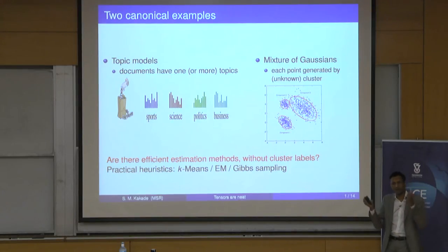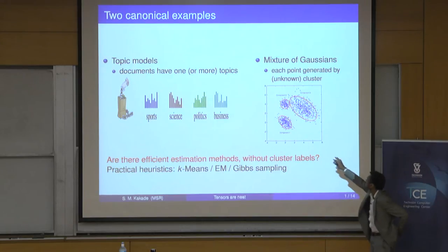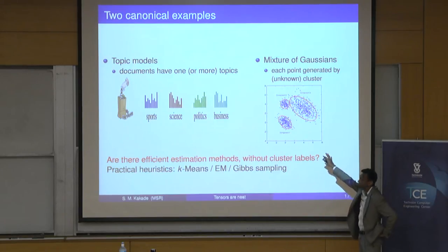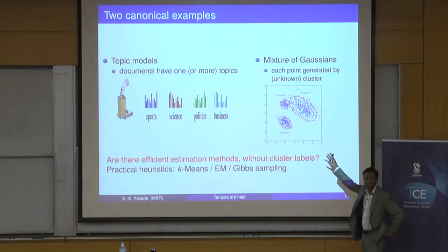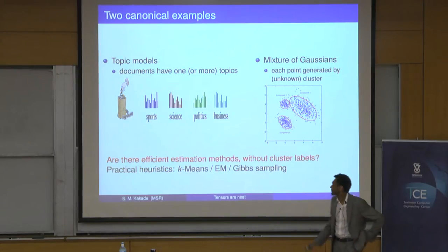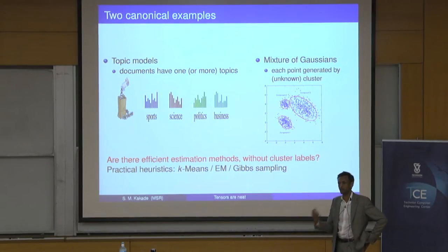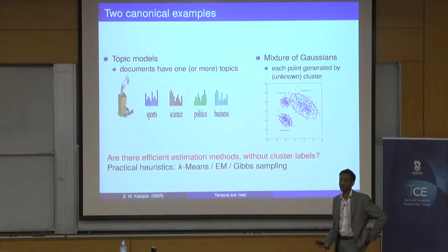The learning problem is: we have a collection of documents and we'd like to figure out the topics, but no one's told us what the topics are. There's also the mixture of Gaussians problem — we see a bunch of points in space, and our goal is to estimate the means of each of these clusters. Given just a collection of documents, how do you get back the topics?